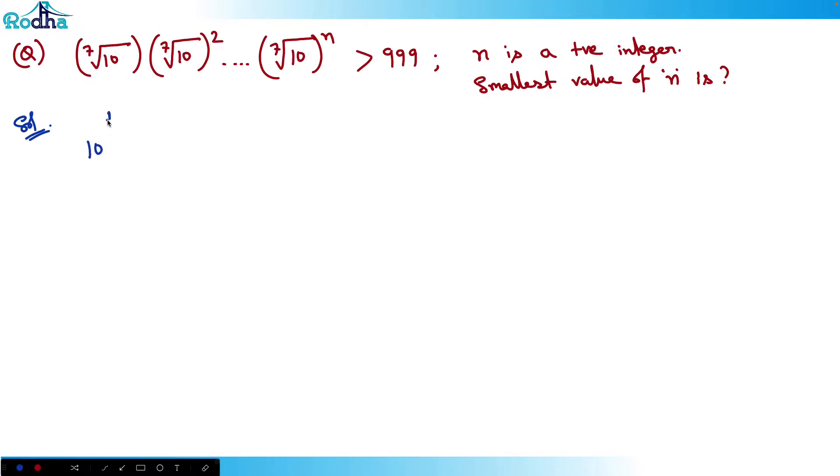So if I write this as 10 raised to 1/7, that's the first term, times 10 raised to 1/7 squared. If it's 10 raised to 1/7 squared, I can actually write this as 10 raised to 2/7. Similarly, 10 raised to 1/7 cubed, then 10 raised to 1/7 to the fourth, and this will go on till 10 raised to 1/7 to the n.